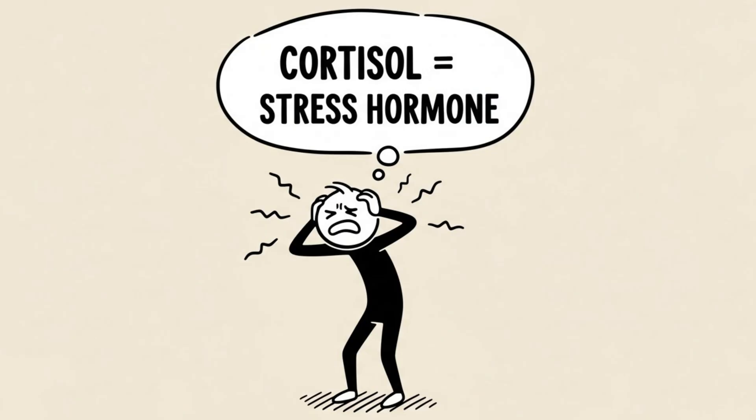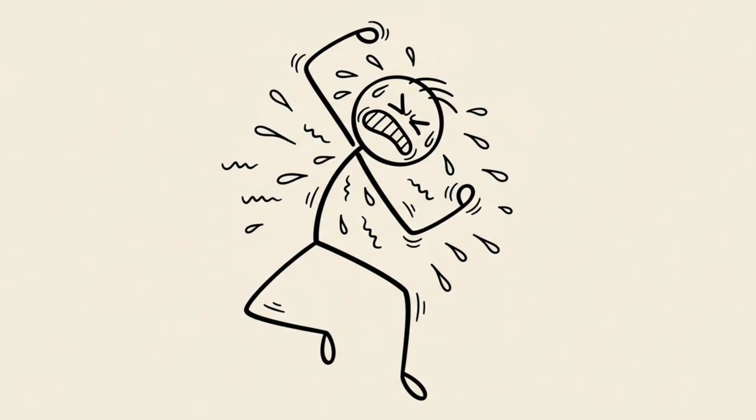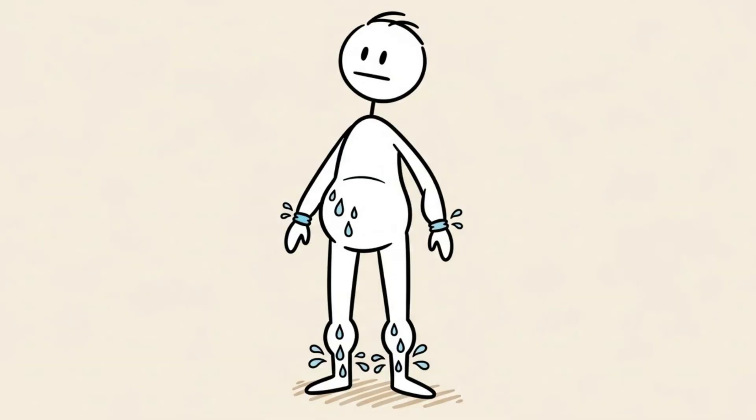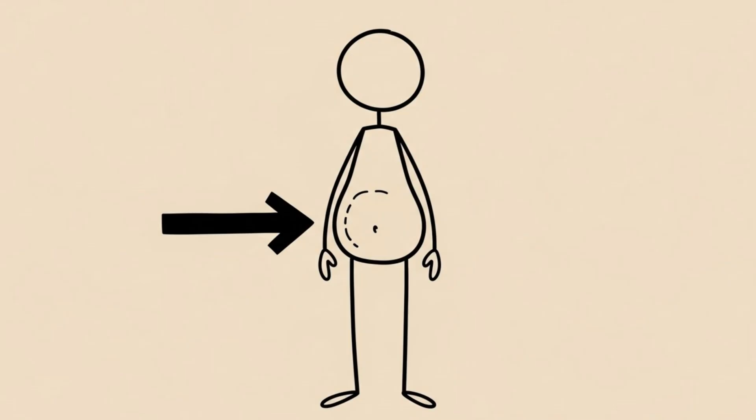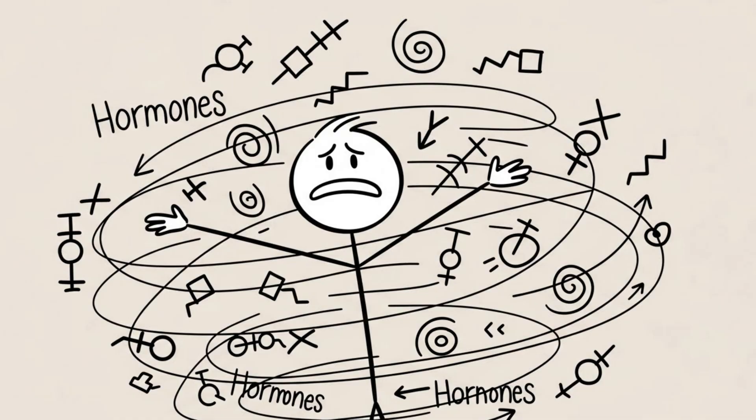Cortisol is your body's stress hormone. When you combine the stress of daily life with the physical stress of excessive high-intensity cardio, your cortisol levels remain chronically elevated. High cortisol leads to water retention and specifically tells your body to store fat around the abdominal area as a survival mechanism.